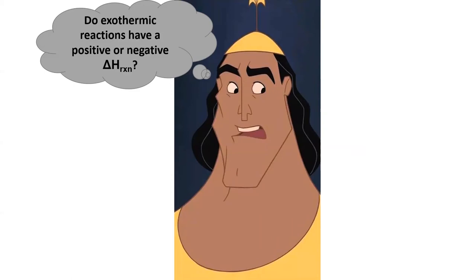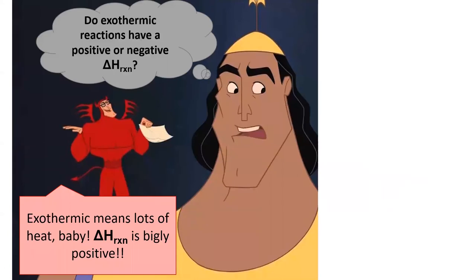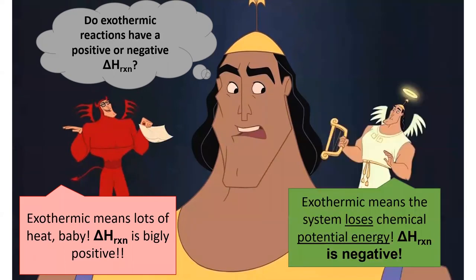Now I'd like to describe something that will guarantee happen to you in this class. You will get a homework problem or a test question which asks: do exothermic reactions have a positive or a negative delta H? And your first thought will be: exothermic means hot, hot means temperature goes up, goes up means positive. Unfortunately, your first thought will be wrong. Exothermic means the system loses chemical energy — it gives away the energy in the form of heat. Delta H is negative for exothermic reactions.